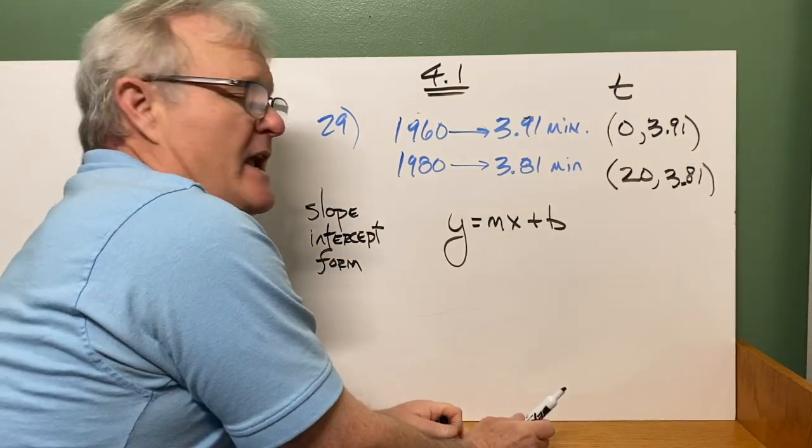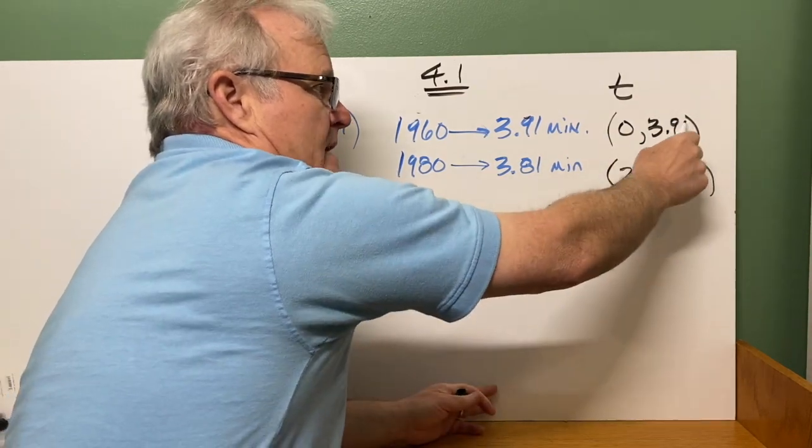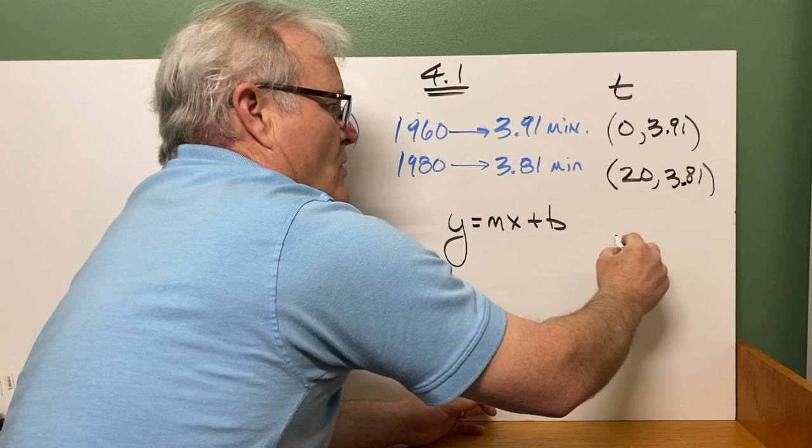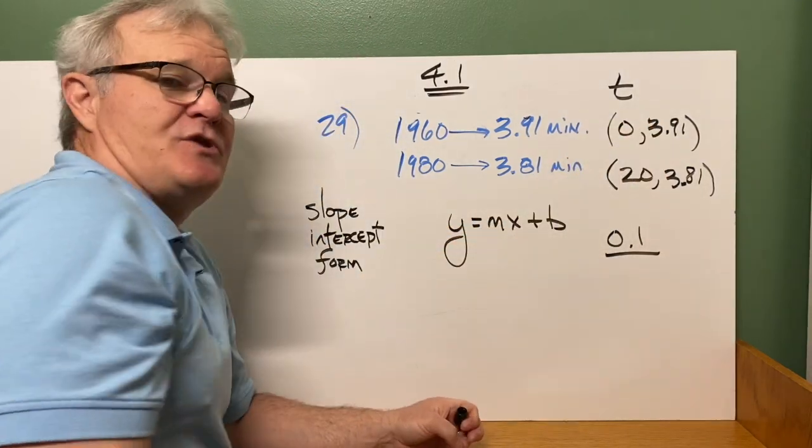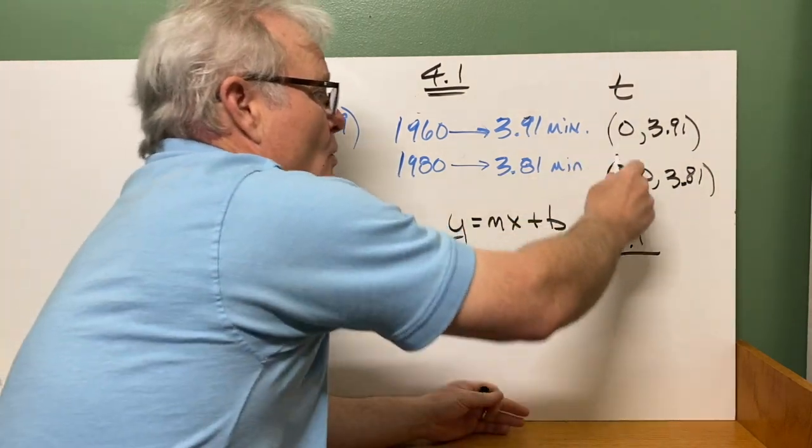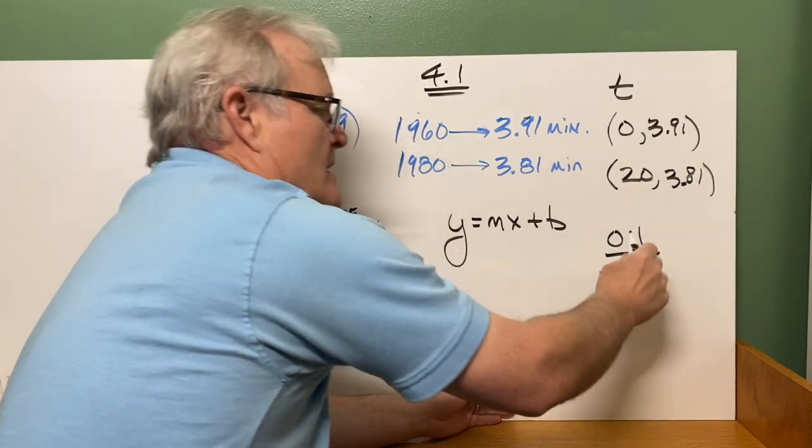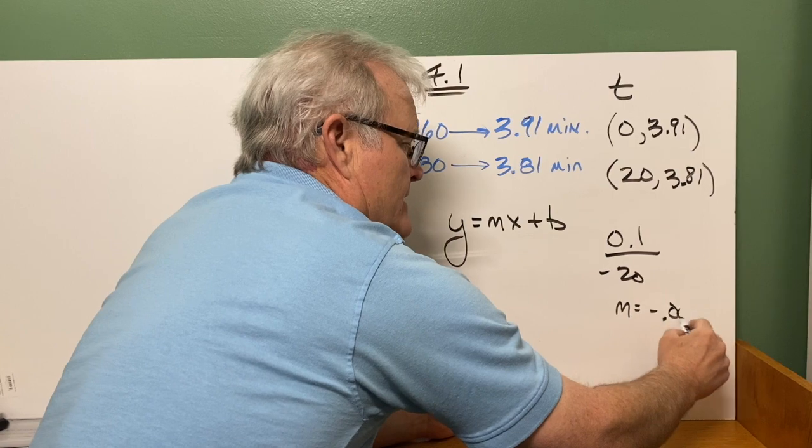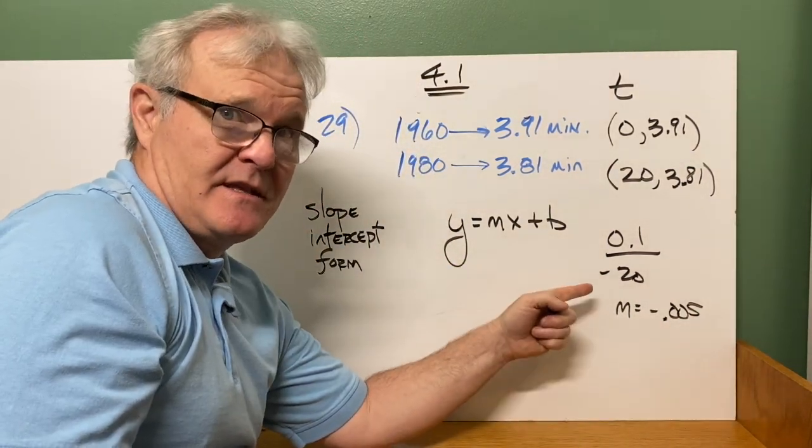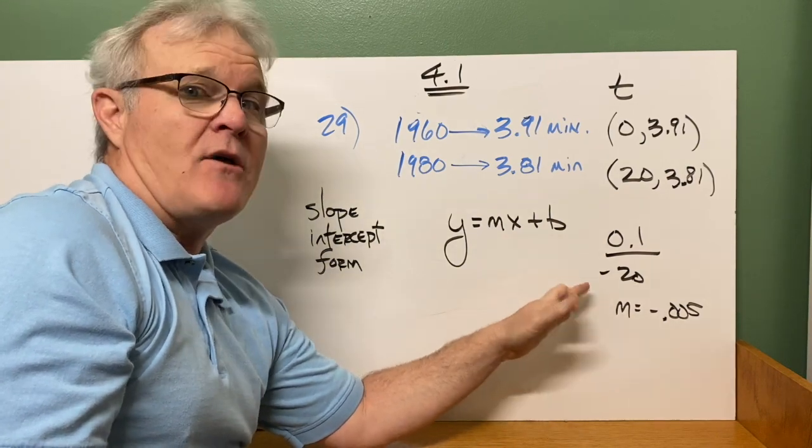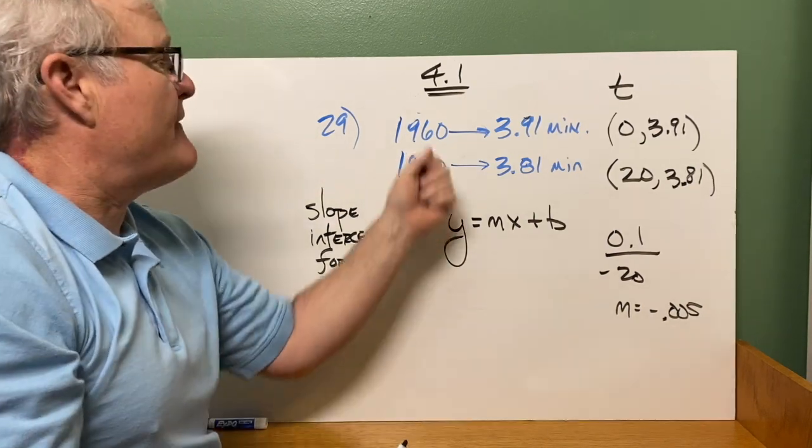Remember, m is our rate of change. So the rate of change is the change in the dependent coordinate or the y. So 3.91 minus 3.81 is 0.1 over change in our x, which in this case is the amount of time since 1960, which is negative 20. So for this one, we get a slope, our m, when we simplify this, is going to be negative 5,000ths. What this rate of change means is that the amount of time for the mile goes down on average about 5,000ths of a minute every year.